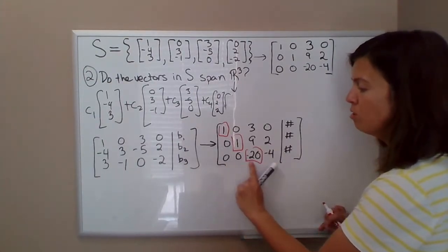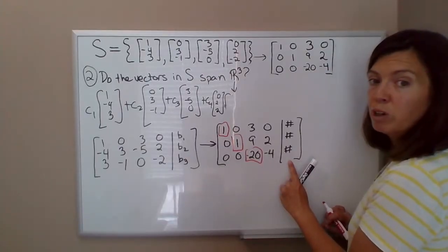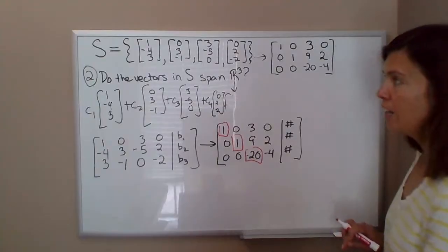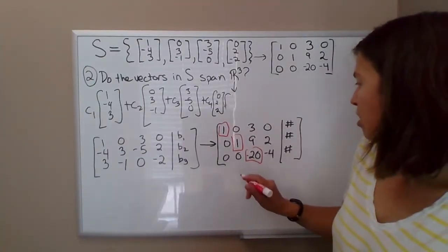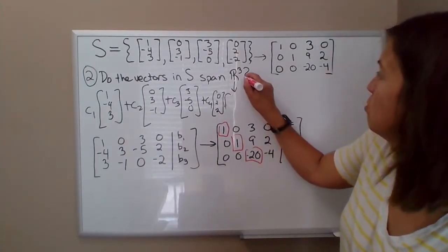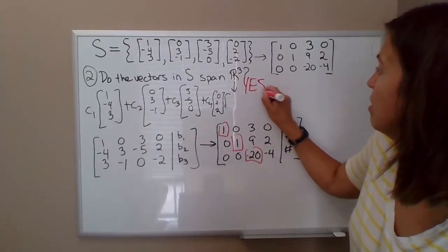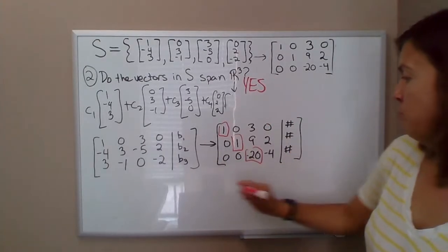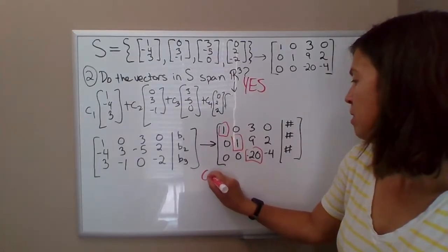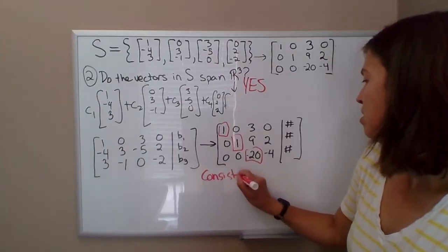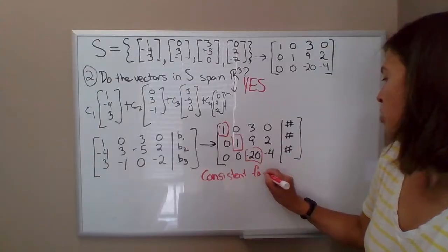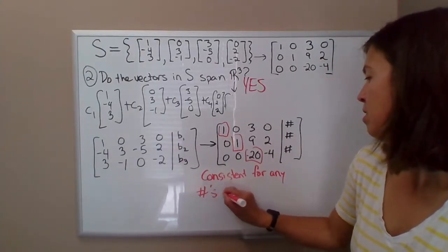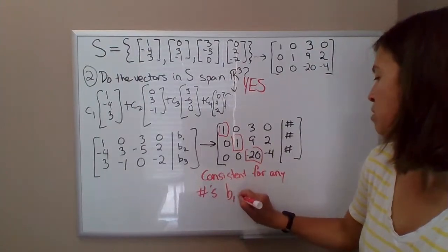Remember, the system is inconsistent when you get 0, 0, 0, 0, and then non-zero number here. So based on the row reduction that we did, that's not going to happen with these vectors. So the vectors do span R³. This will be consistent for any values of B1, B2, B3. I'll write that down.